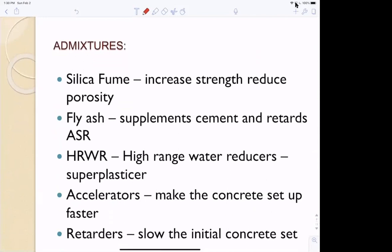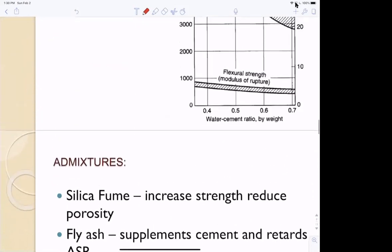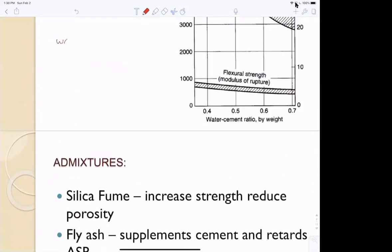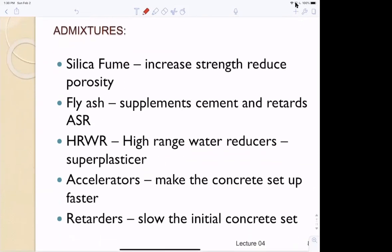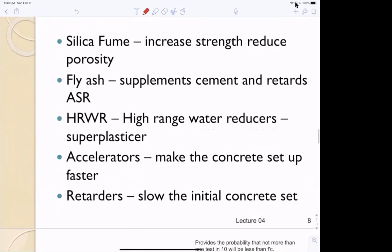The admixtures that you can add to concrete - remember, concrete is made up of water, cement, fine aggregate or sand, and coarse aggregate or gravel. To that, you can add things like silica fume, which increases strength and reduces porosity, making it more durable. Fly ash is cheaper, so it substitutes for the cement.